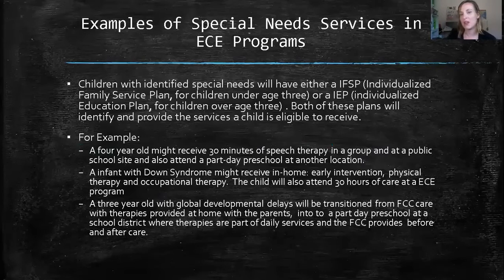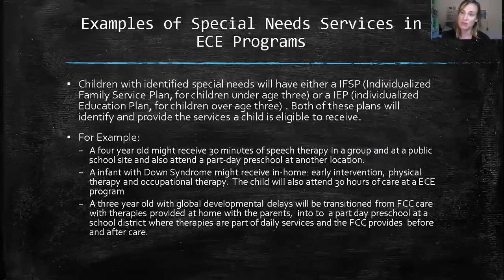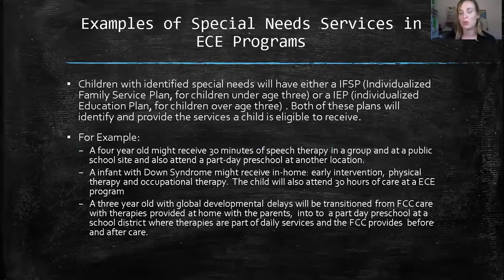I've sat on many IEP and IFSP meetings where the school district goes back and forth with parents advocating for their child — for example, a parent saying they work and need transportation from their child care location to the school district and back because they can't be off at nine o'clock on a Wednesday morning. That's the work the parent is doing: advocating for what kind of therapy their child receives. As a provider, you're there to make sure you accommodate the children — aisles wide enough for a wheelchair, allowing aides to come in if the child has autism — so the child can thrive.